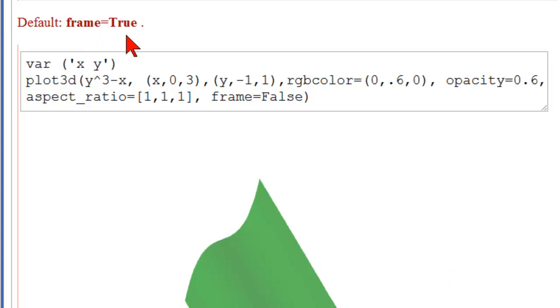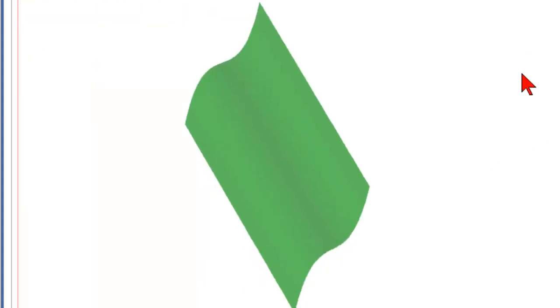By default frame is equal to true. That's the box. So if you declare frame equal to false, as you can see, there's no box. So here is the same image as before, but no box.